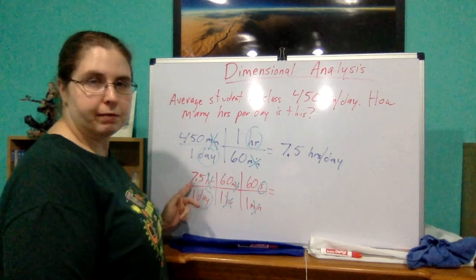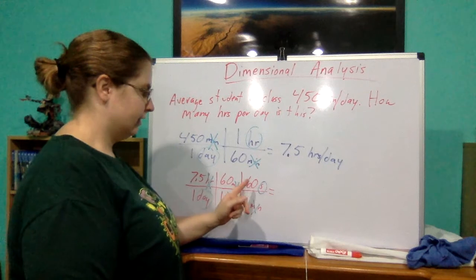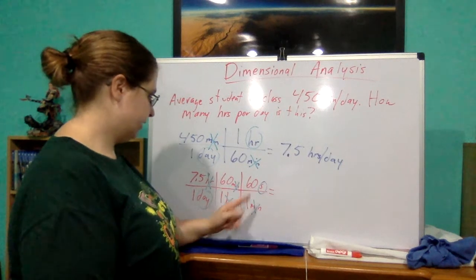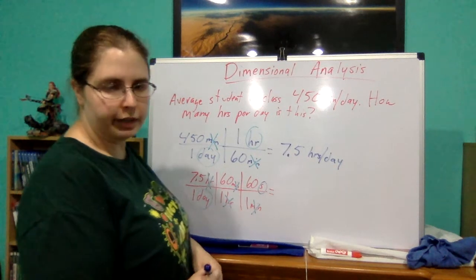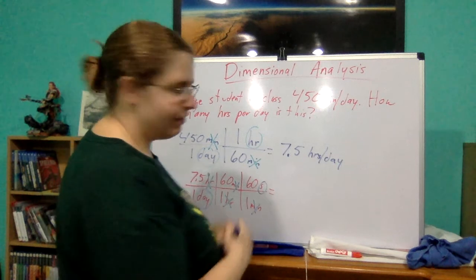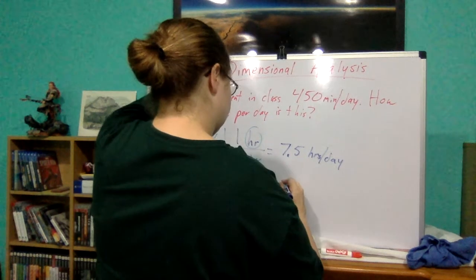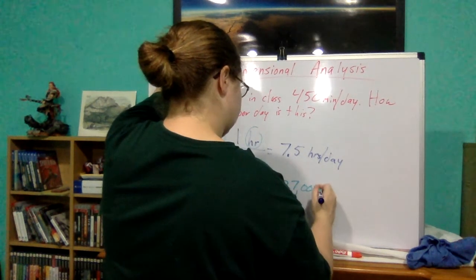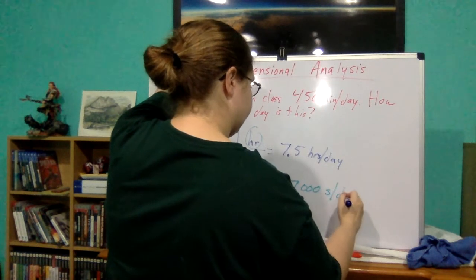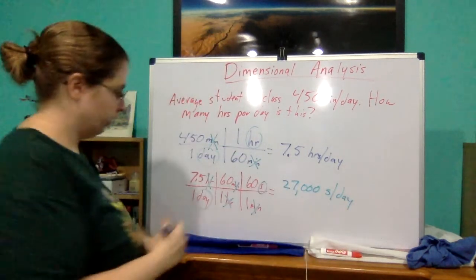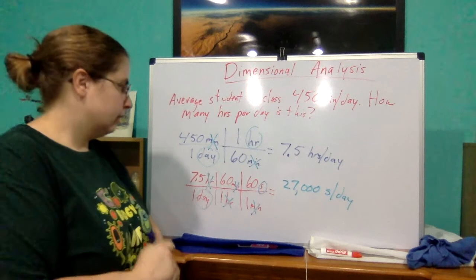So 7.5 times 60, times 60 again, divided by 1 would give us 27,000 seconds in one day.